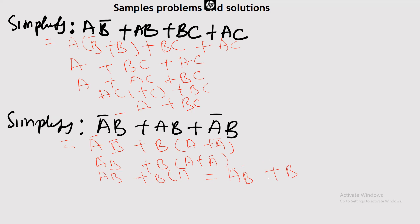So those are the solutions. Now quickly, I want us to go into the use of Karnaugh map to simplify Boolean expressions. This is my Boolean expression.